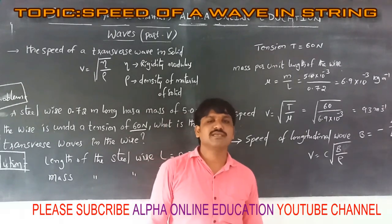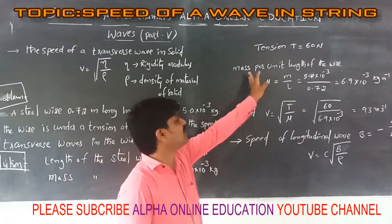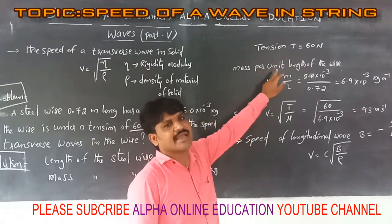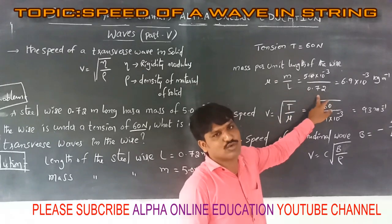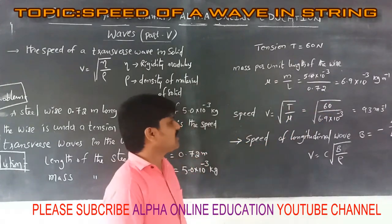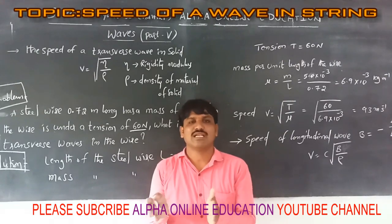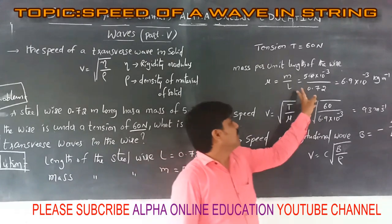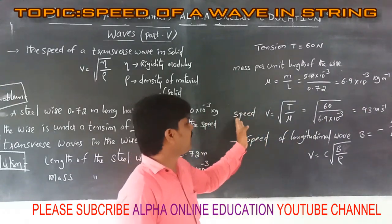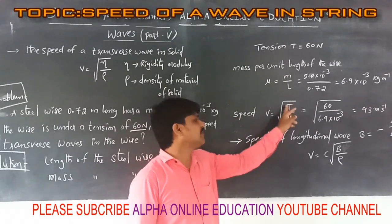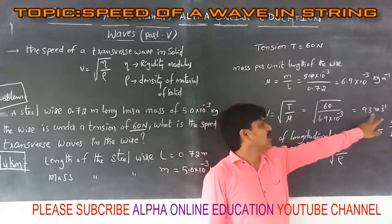We know that the mass density mu equals M divided by L. Substituting the values: mu equals 5.0 × 10⁻³ divided by 0.72, giving approximately 6.92 × 10⁻³ kg per meter. If values are given in CGS units, convert them to SI units first. Now applying V equals root of T divided by mu, with T equals 16 Newton and mu equals 6.92 × 10⁻³, we get a speed of approximately 93 meters per second.